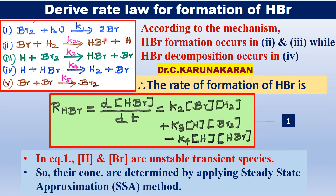Let us derive the rate law for the formation of HBr in the photochemical reaction. HBr is formed in step 2 and step 3, whereas HBr is consumed in step 4. Therefore, the rate of formation of HBr — d[HBr]/dt — is: HBr formation is positive and HBr decomposition is negative.